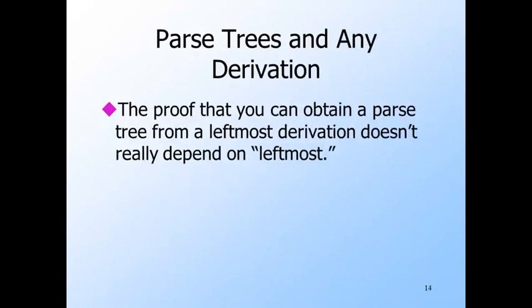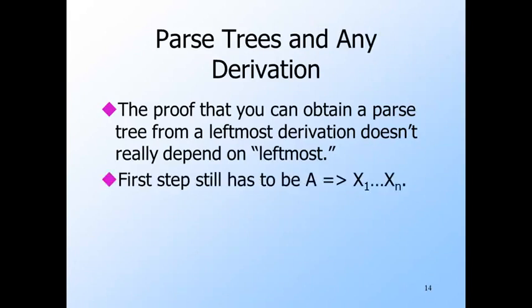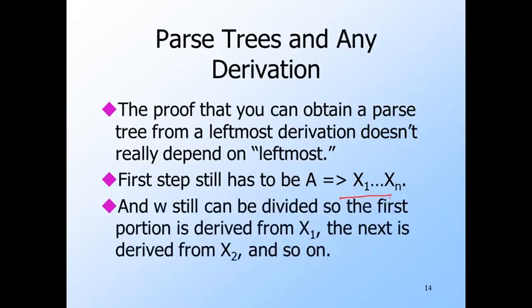Any derivation, even one that isn't leftmost or rightmost, of a terminal string W from variable A implies there is a parse tree with root A and yield W. The first step replaces A by some x1 through xn, and we can break W into w1 through wn accordingly. The tricky part is that derivation steps from different xi's may be intermingled, and we must sort the steps according to which xi's descendant is being replaced. We'll leave the details of this construction to you.